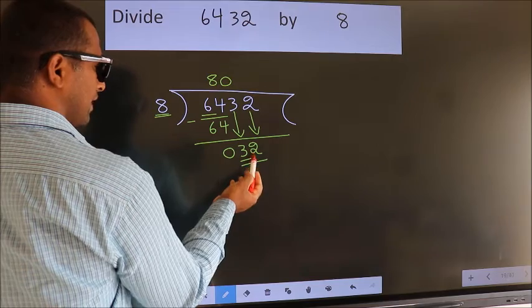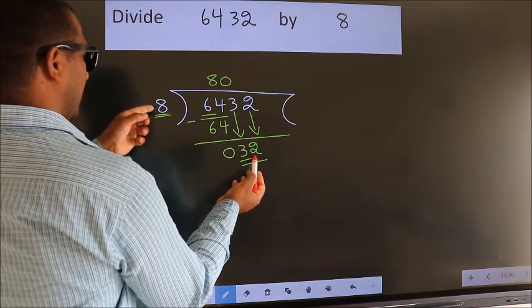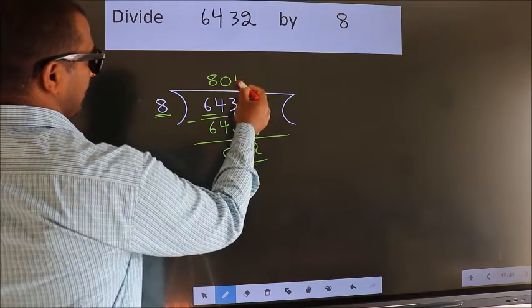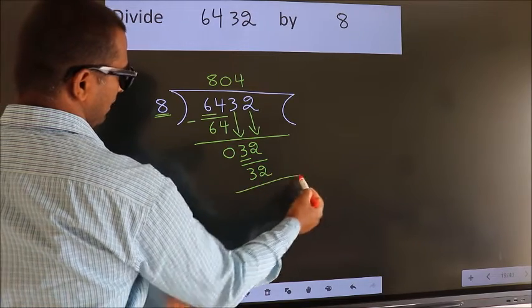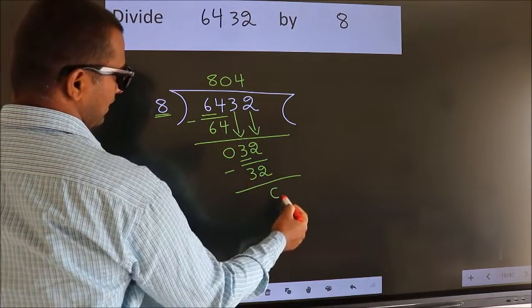So, 32. When do we get 32? In 8 table. 8 fours, 32. Now, we subtract. We get 0.